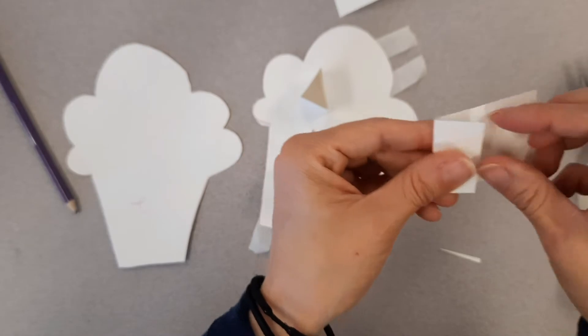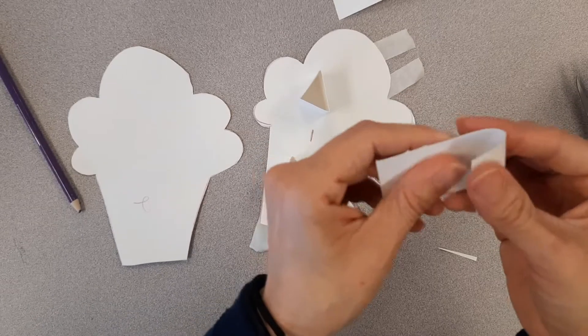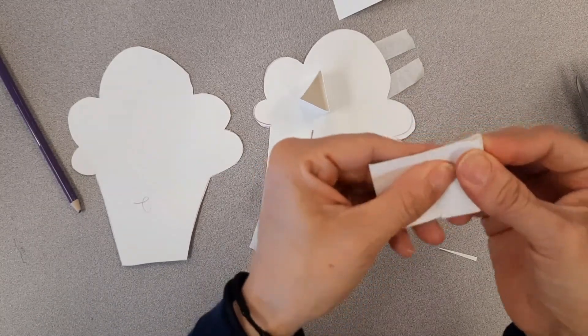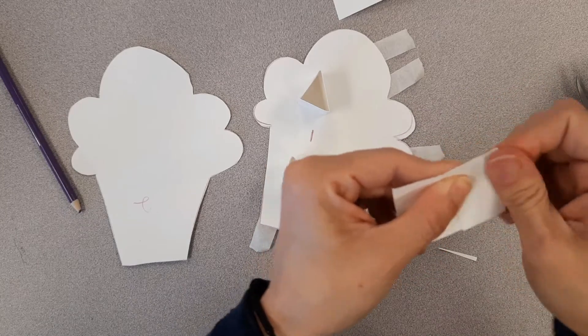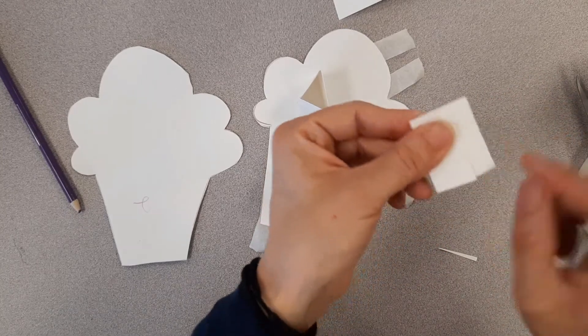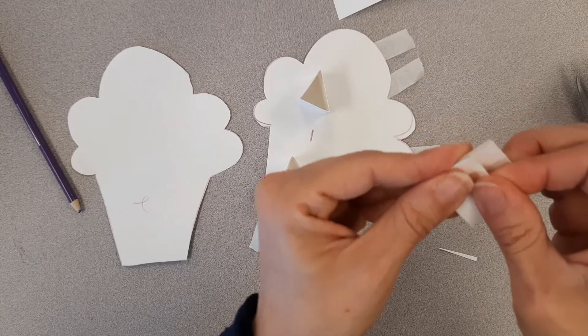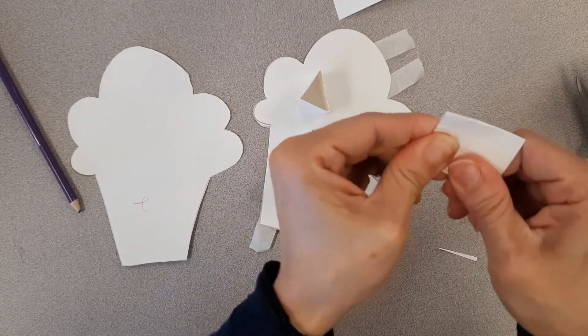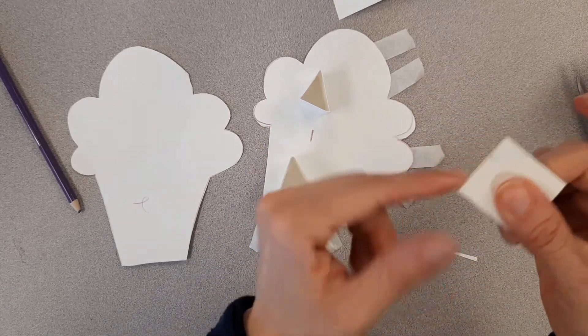When you do these, make sure you don't fold them crooked like this. Make sure you fold them super even where they're even at the top. So that whenever you fold them together, you don't have this weird extra. And then they won't make your piece uneven. So make sure they're pretty even when you fold them.